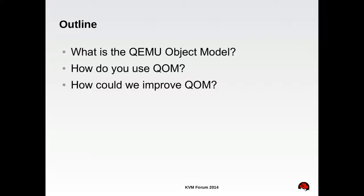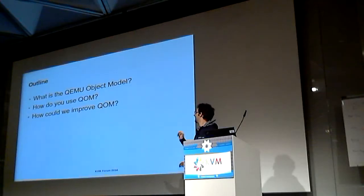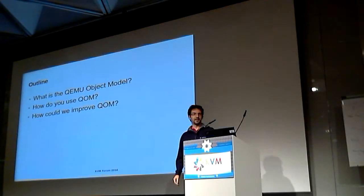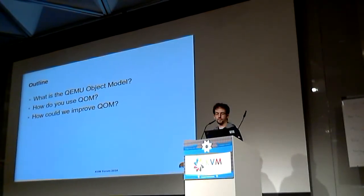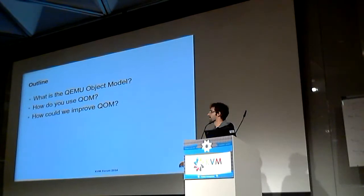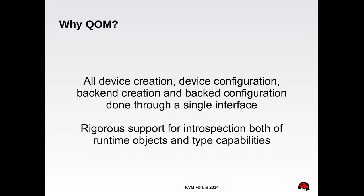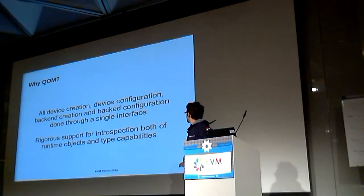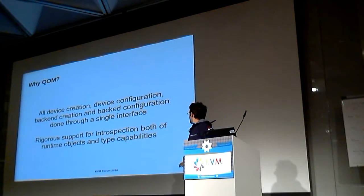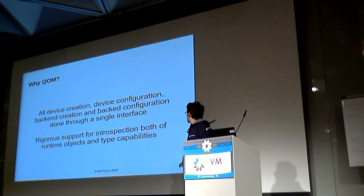So basically, the outline of the talk is what is QM, how do you use it, how it could be improved, and why it is the way it is. QM was introduced for this purpose: all device creation, device configuration, and backend creation and backend configuration should be done through a single interface with rigorous support for introspection of runtime objects and type capabilities. In short — magic.